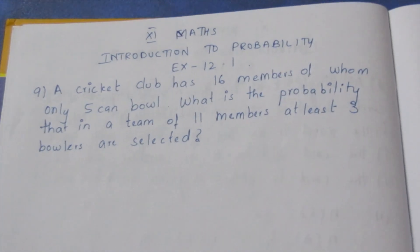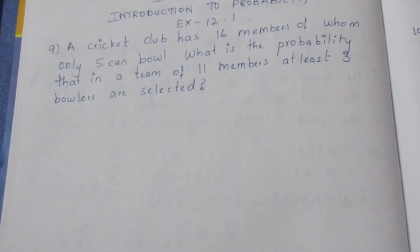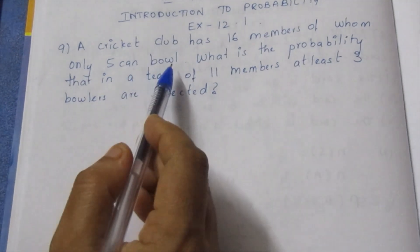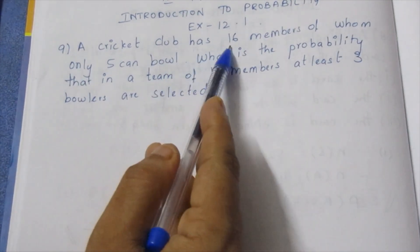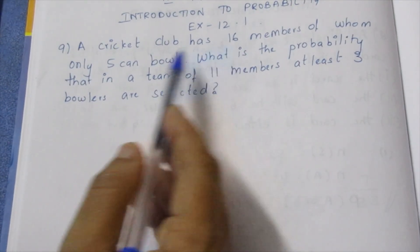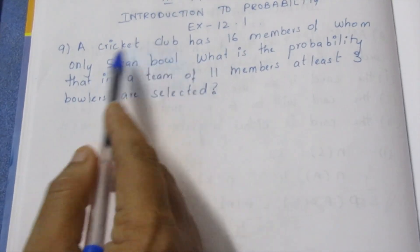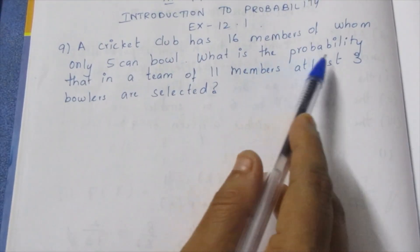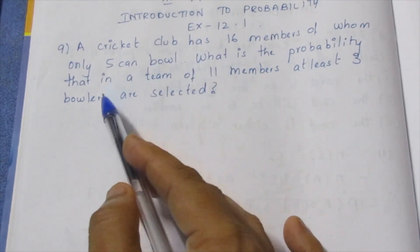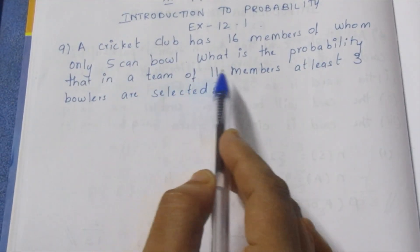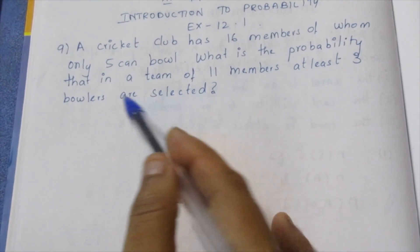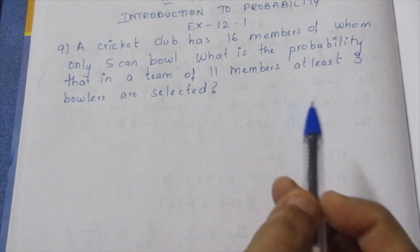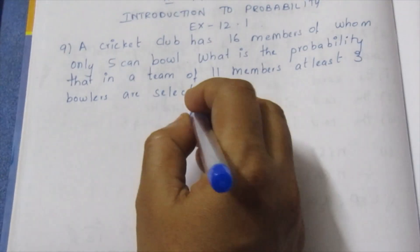A cricket club has 16 members, of whom only 5 can bowl. What is the probability that in a team of 11 members, at least 3 bowlers are selected?